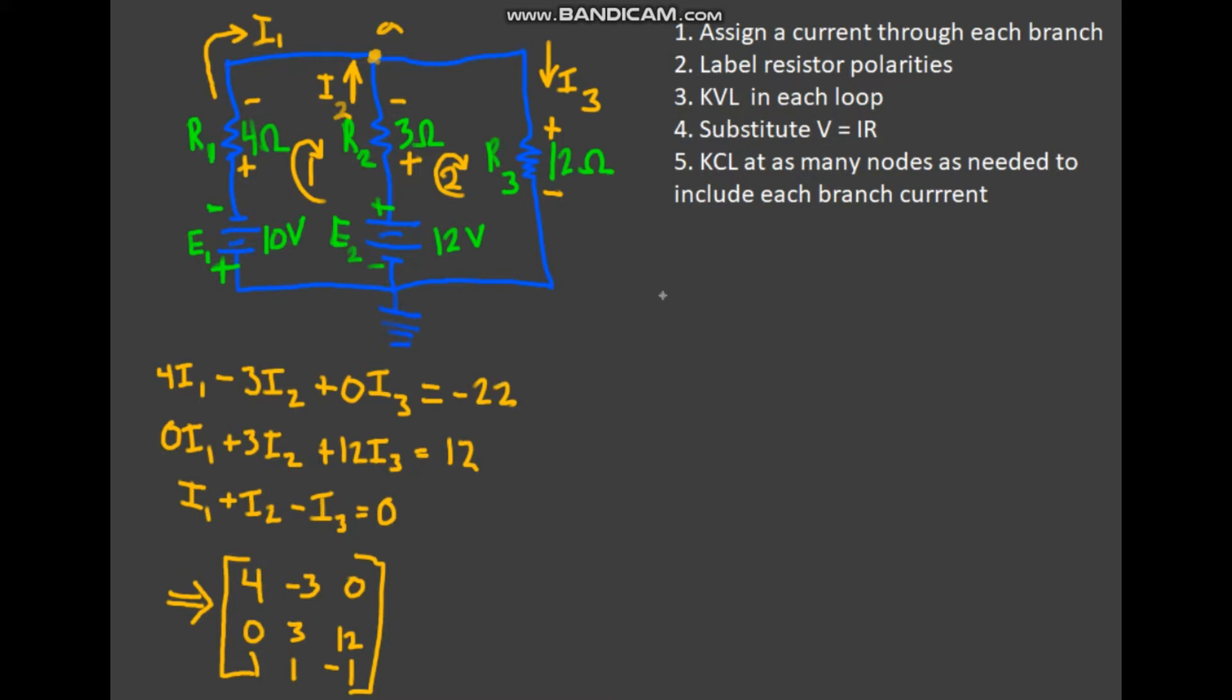But now I want to show you how to use some linear algebra techniques in order to solve for your unknown currents. So here we have our current equations. I just put them in a little bit simpler form, adding the 0I₃, 0I₁, and I put it in matrix form over here.